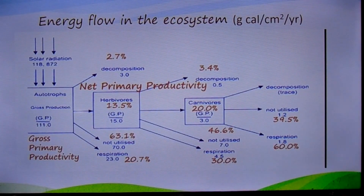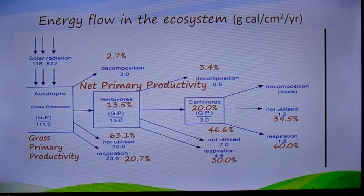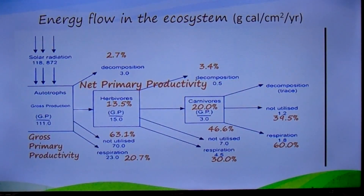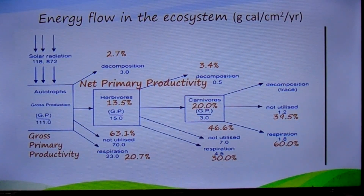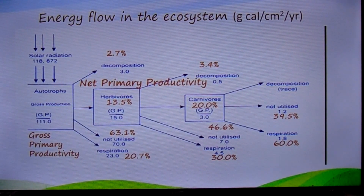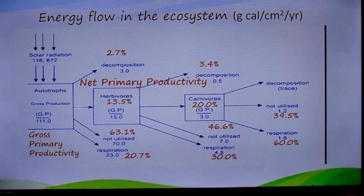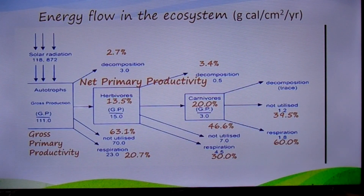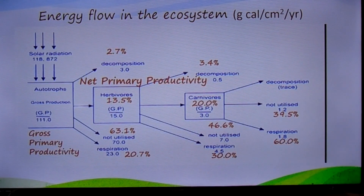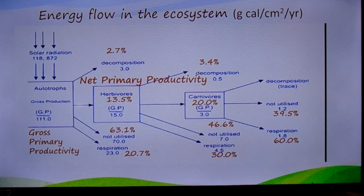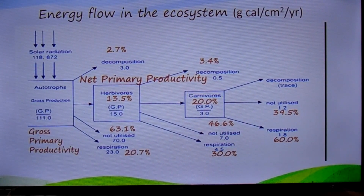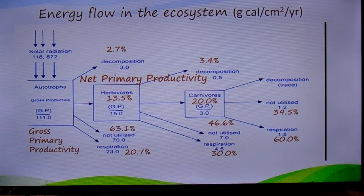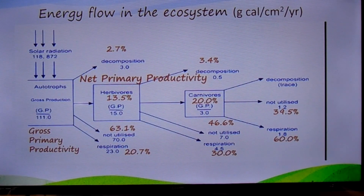Similarly, of the 13.5 percent available to herbivores, only 20 percent of energy is funneled up to the carnivores, and the remaining 80 percent is lost to the environment. Two key points become clear: firstly, energy flows unidirectionally — the energy captured by autotrophs does not revert back to the solar input, and energy passed to herbivores does not pass back to autotrophs. As energy moves progressively through the various trophic levels, it is no longer available to previous levels.